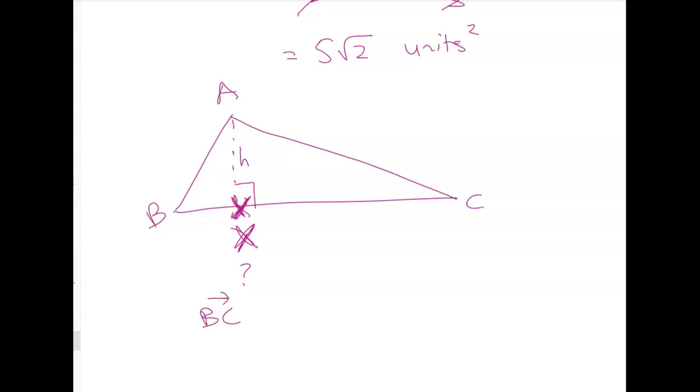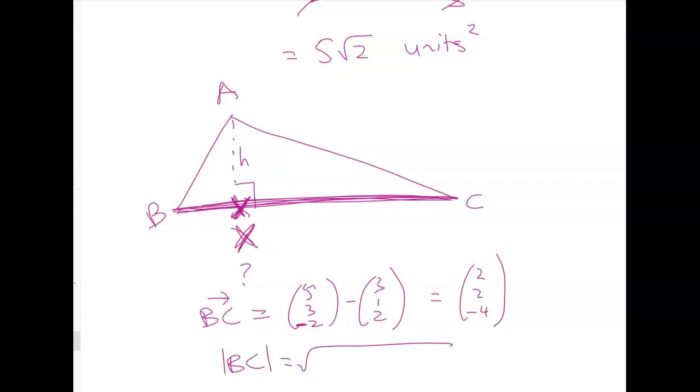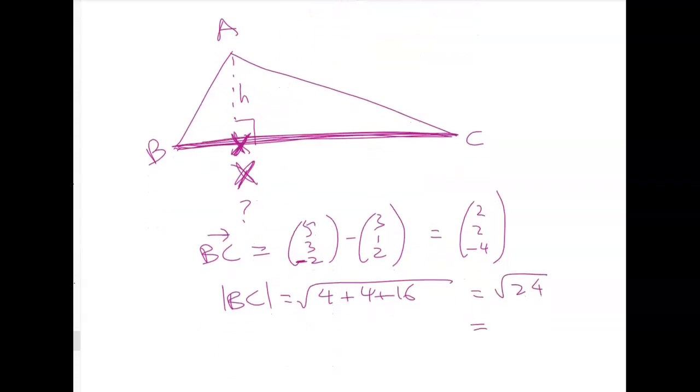Let's first of all find vector BC. We know that we're going to need this because we're going to do half the base times the height. So vector BC is easily found. It's 5, 3, 2, minus 3, sorry, 5, 3, negative 2, minus 3, 1, 2, which gives me 2, 2, negative 4. And the length of that vector will be the square root of 4 plus 4 plus 16, which is the square root of 24. And I can simplify that and get 2 root 6.